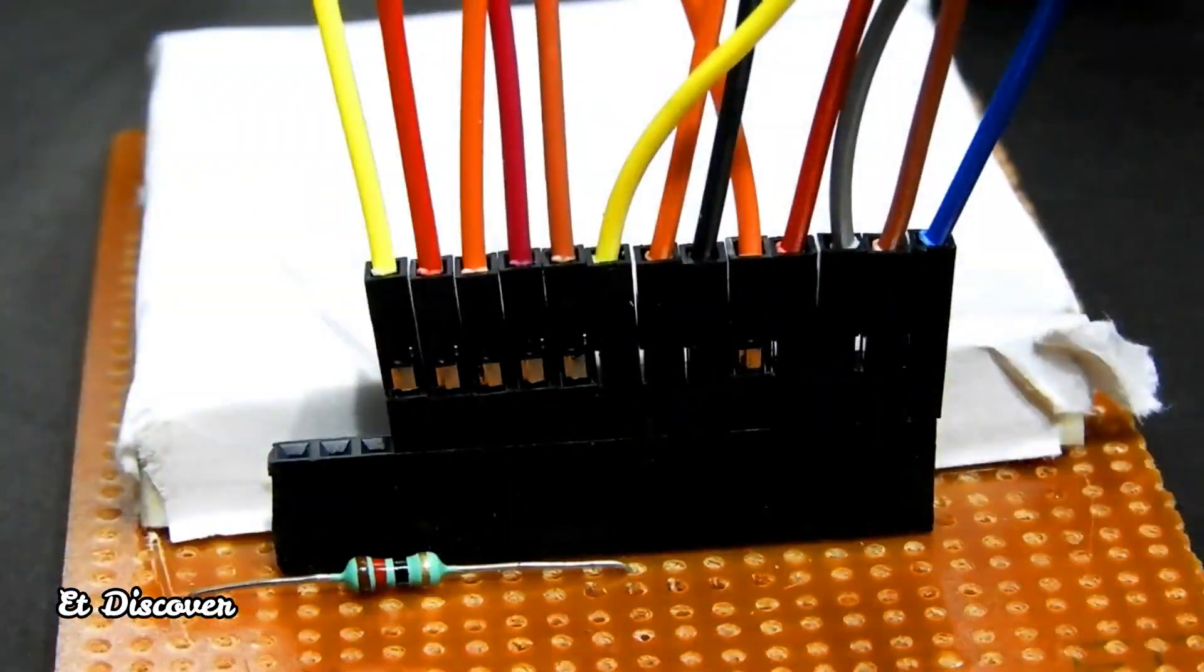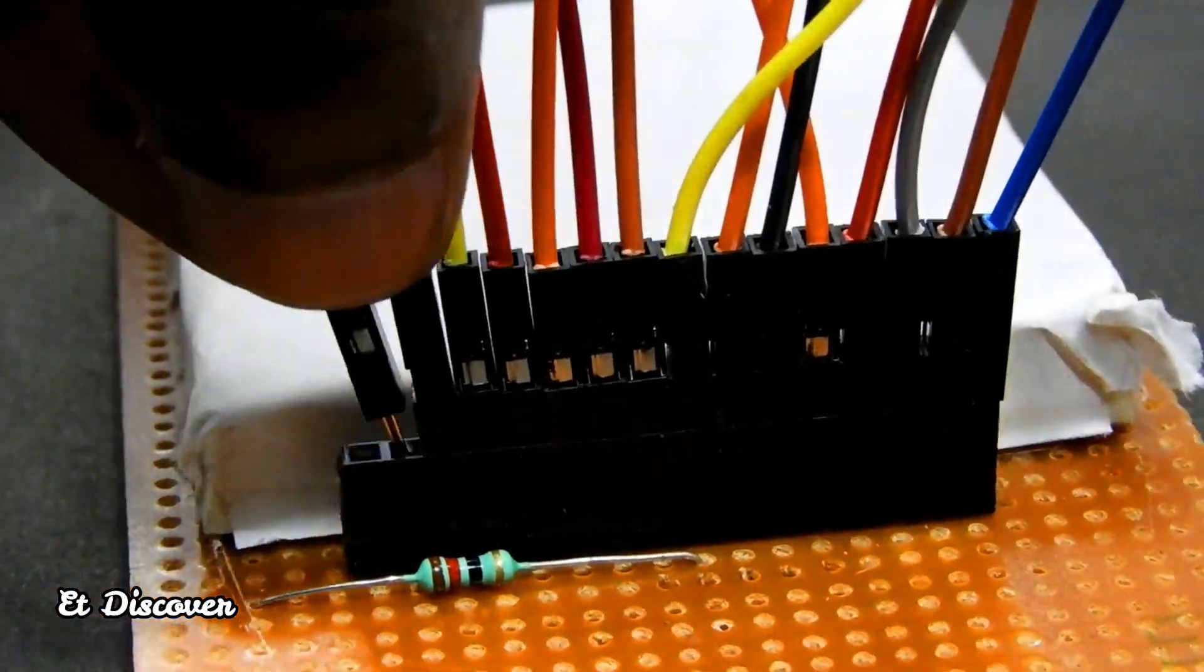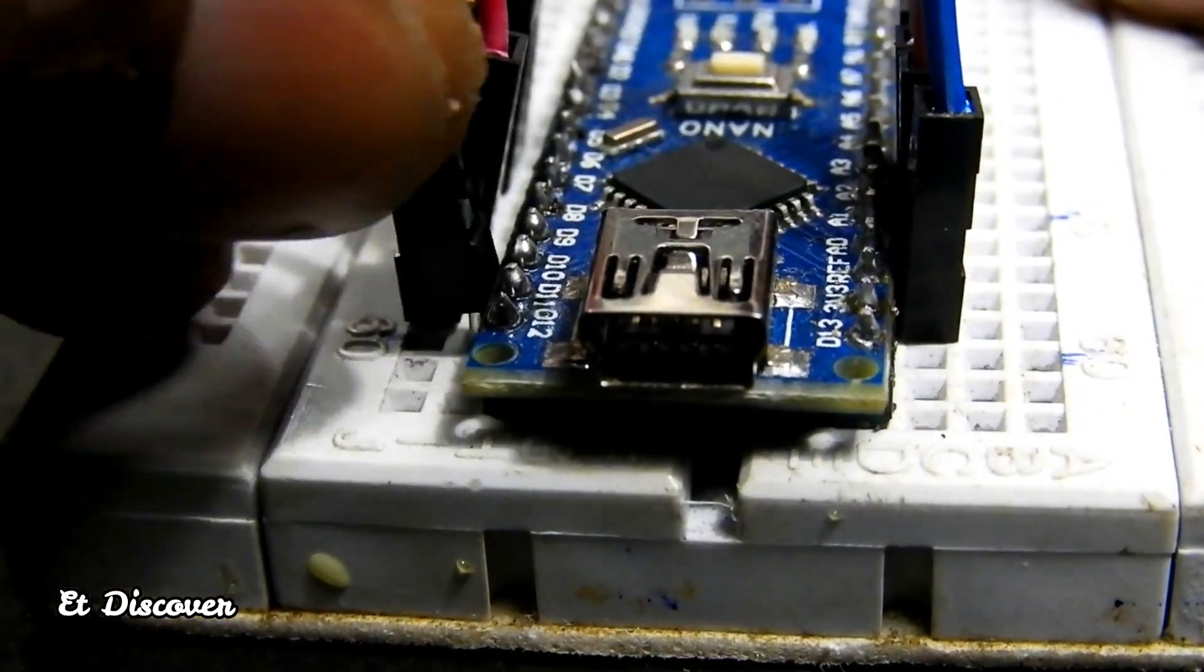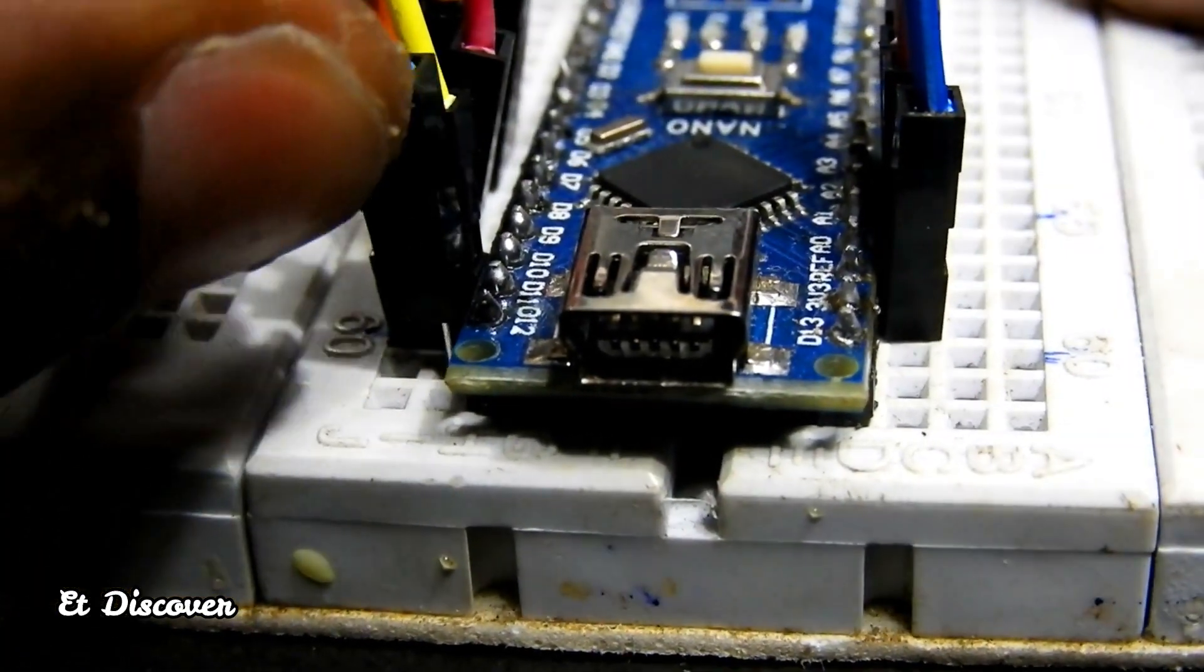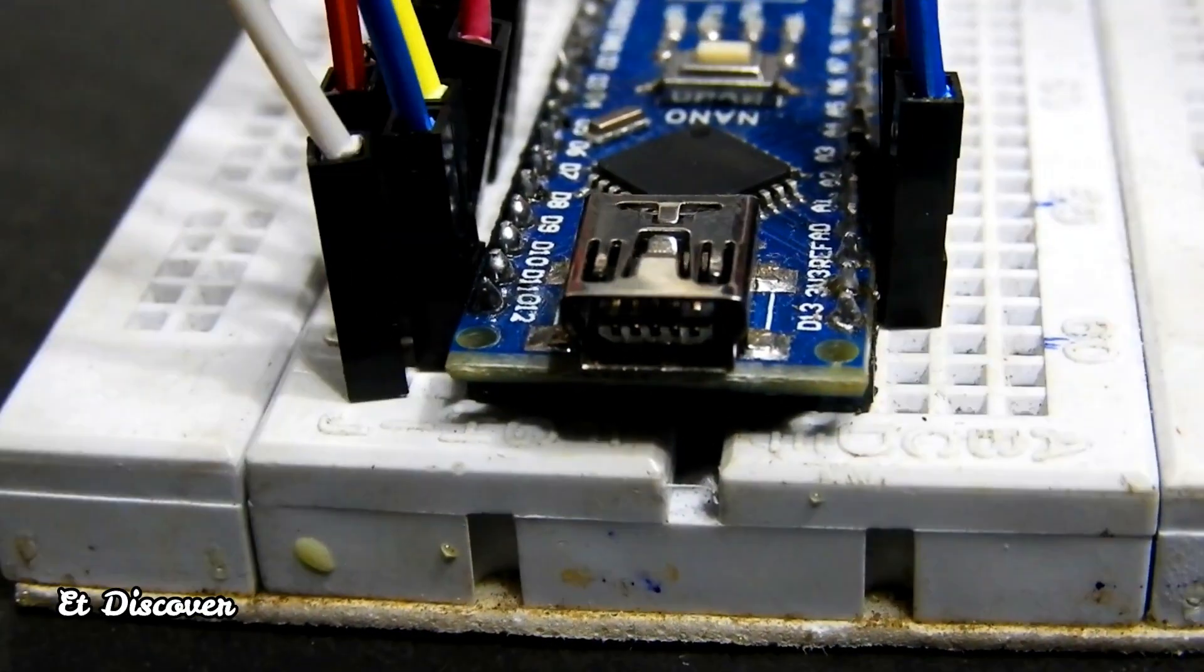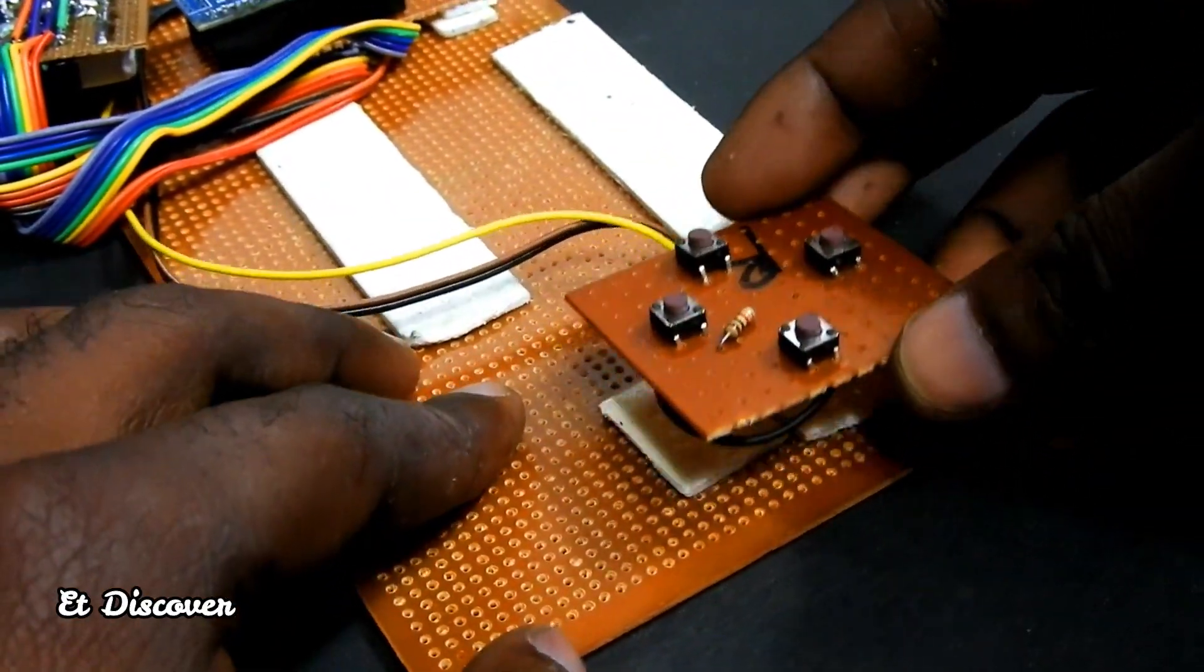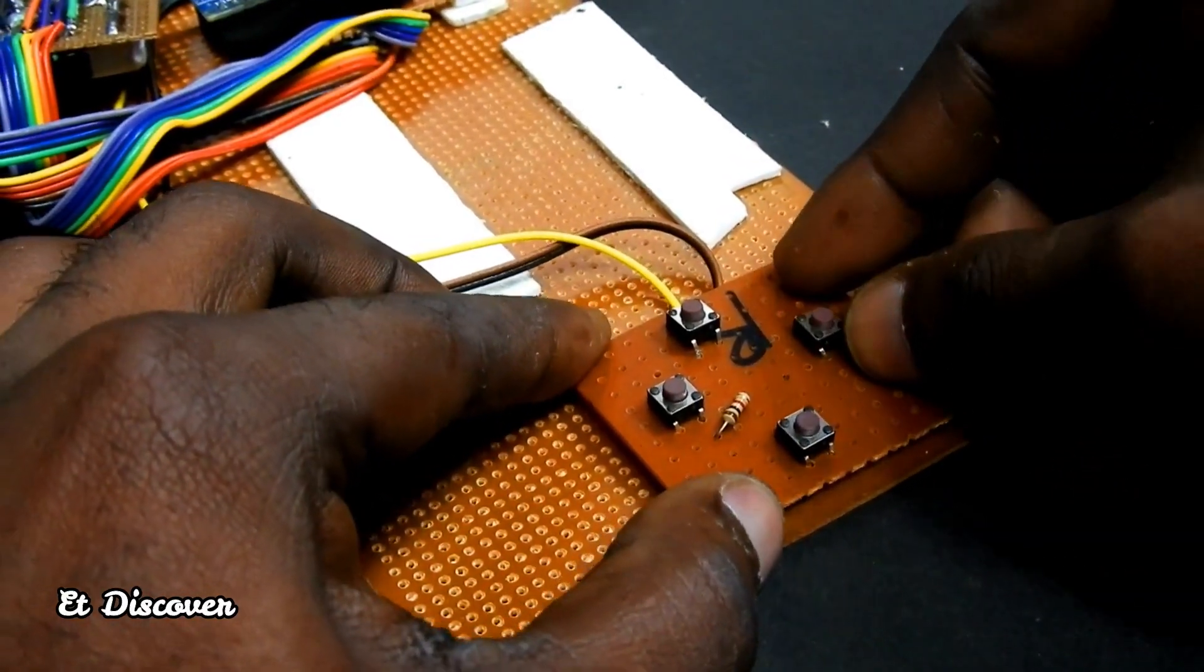And finally I connected all the matrix display's rows and column pins with the microcontroller. And set some switches through which the game can be controlled.